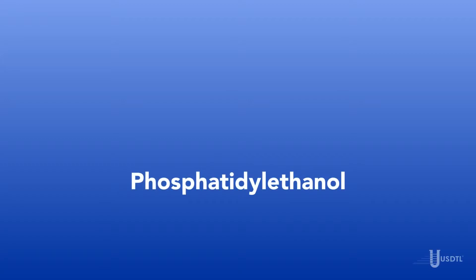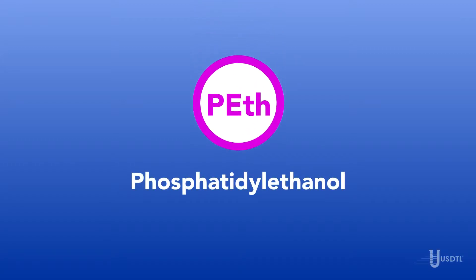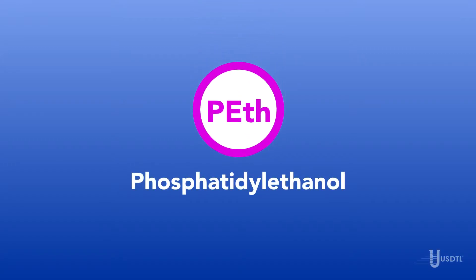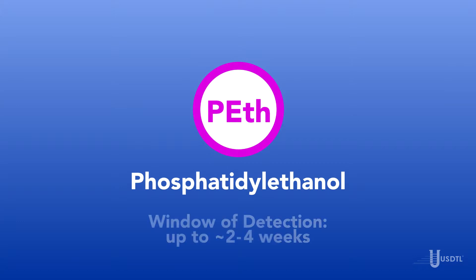Phosphatidyl ethanol, also known as PEth, is a highly sensitive direct alcohol biomarker with a window of detection up to approximately 2 to 4 weeks.